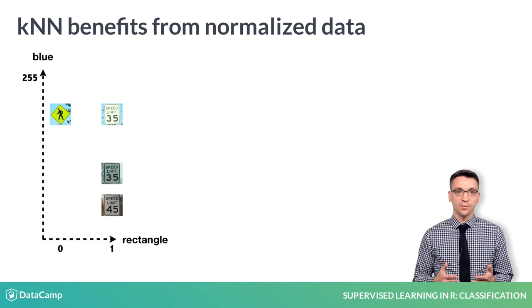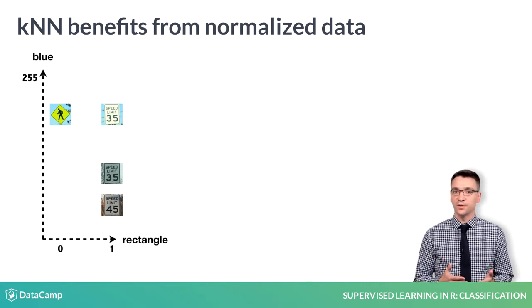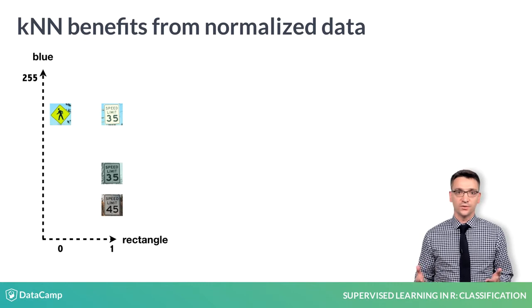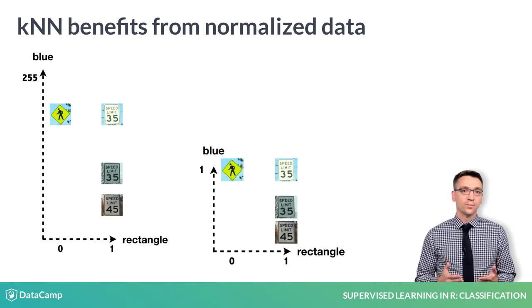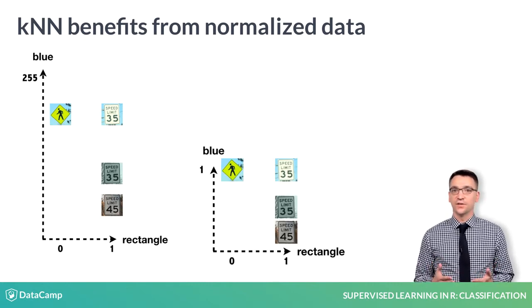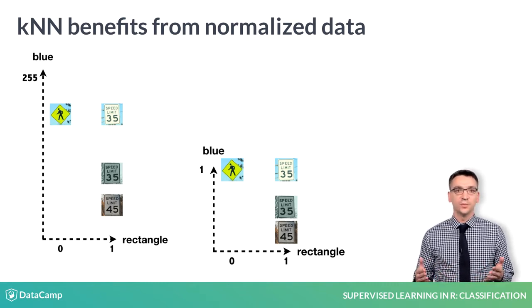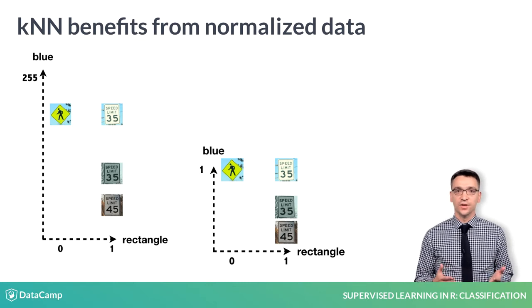Here, the topmost speed limit sign is closer to the pedestrian sign than it is to its correct neighbors, simply because the range of blue values is wider than the zero to one range of shape values. Compressing the blue axis so that it also follows a zero to one range corrects this issue, and the speed limit sign is now closer to its true neighborhood.